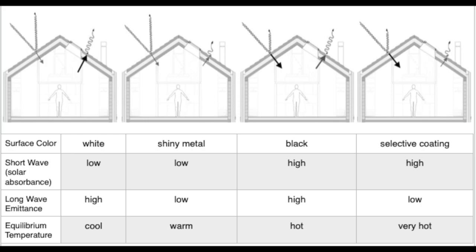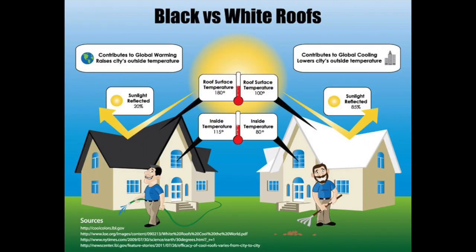The balance between absorbance and emittance determines how hot the plate will get — the equilibrium temperature. Black has a much higher equilibrium temperature than white because it has a much higher absorbance factor. However, black is not the ideal collector of radiant energy because of its high emissivity; its equilibrium temperature is suppressed because it irradiates much of the energy it has absorbed. The equilibrium temperature is a consequence of both the absorbance and emittance characteristics of the material.